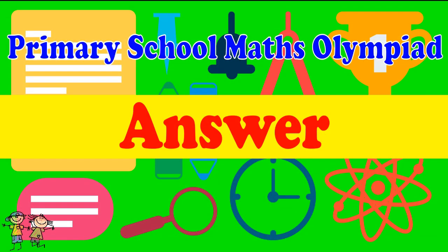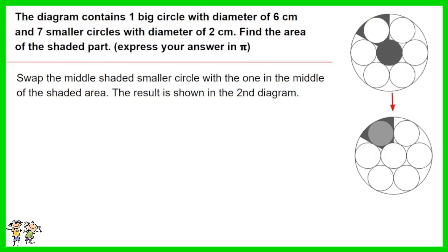Here is the recommended answer. Swap the middle shaded smaller circle with the one in the middle of the shaded area. The result is shown in the second diagram.